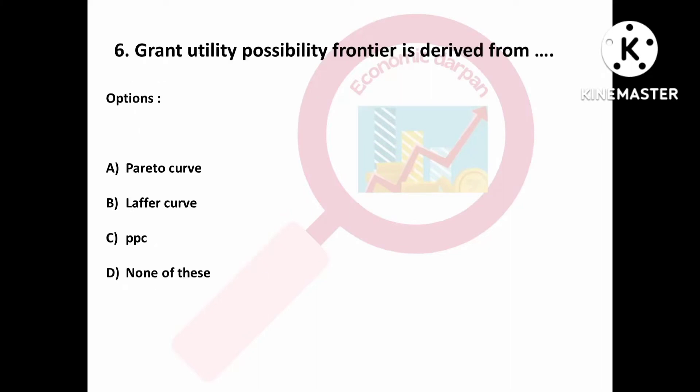Question number six is: the grand utility possibility frontier is derived from — Option C: PPC, that means production possibility curve; Option D: none of these. The grand utility possibility frontier is derived from the PPC.